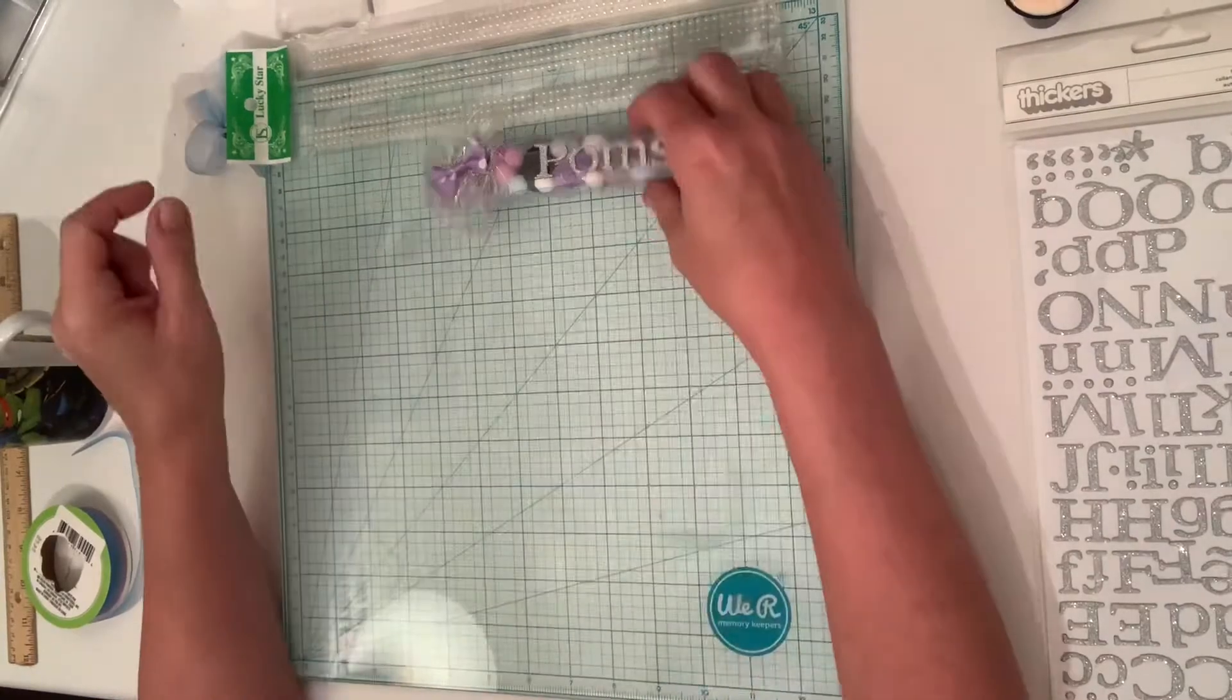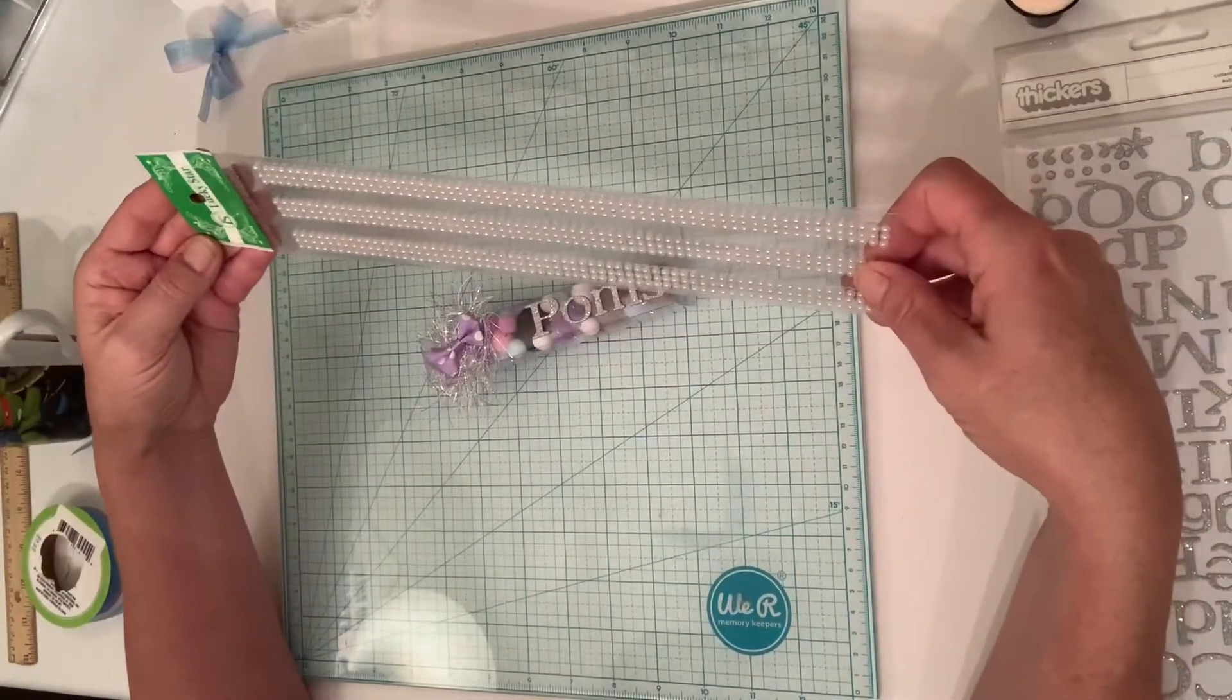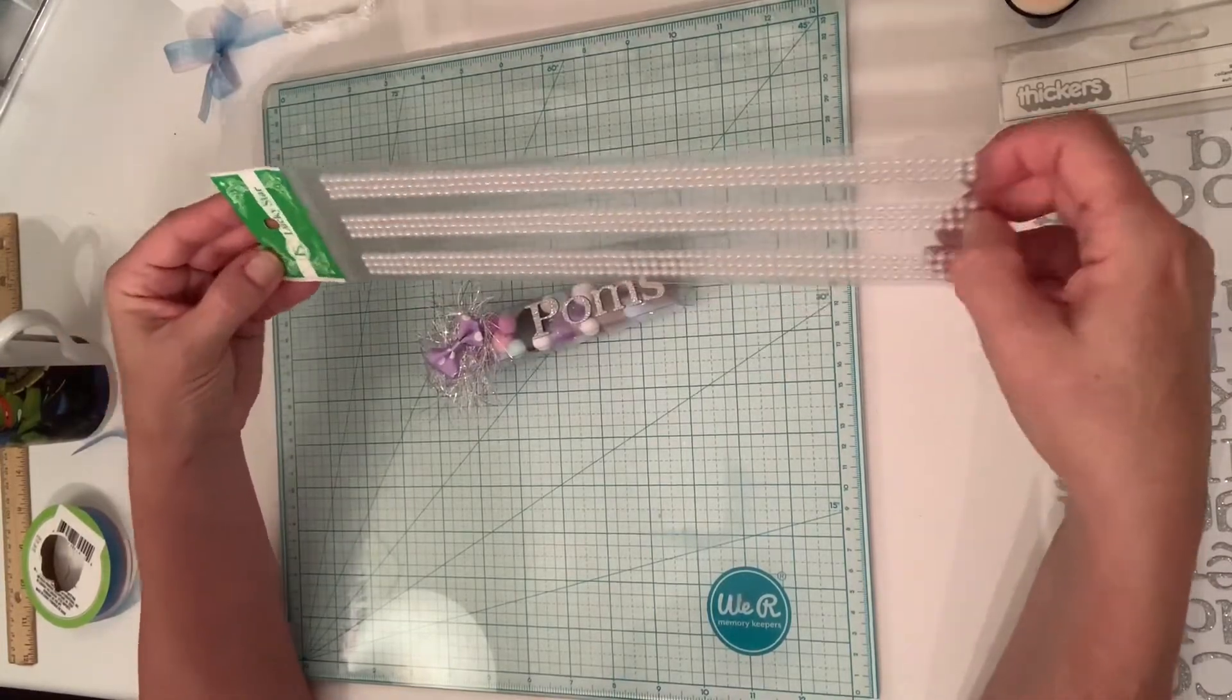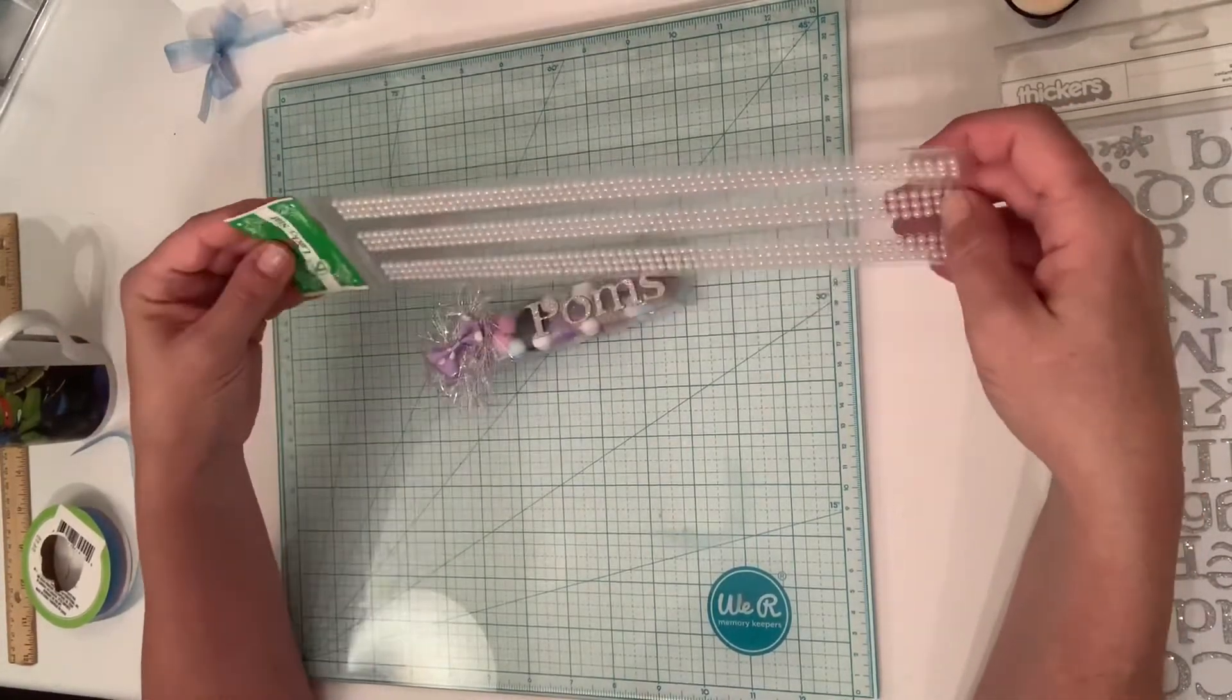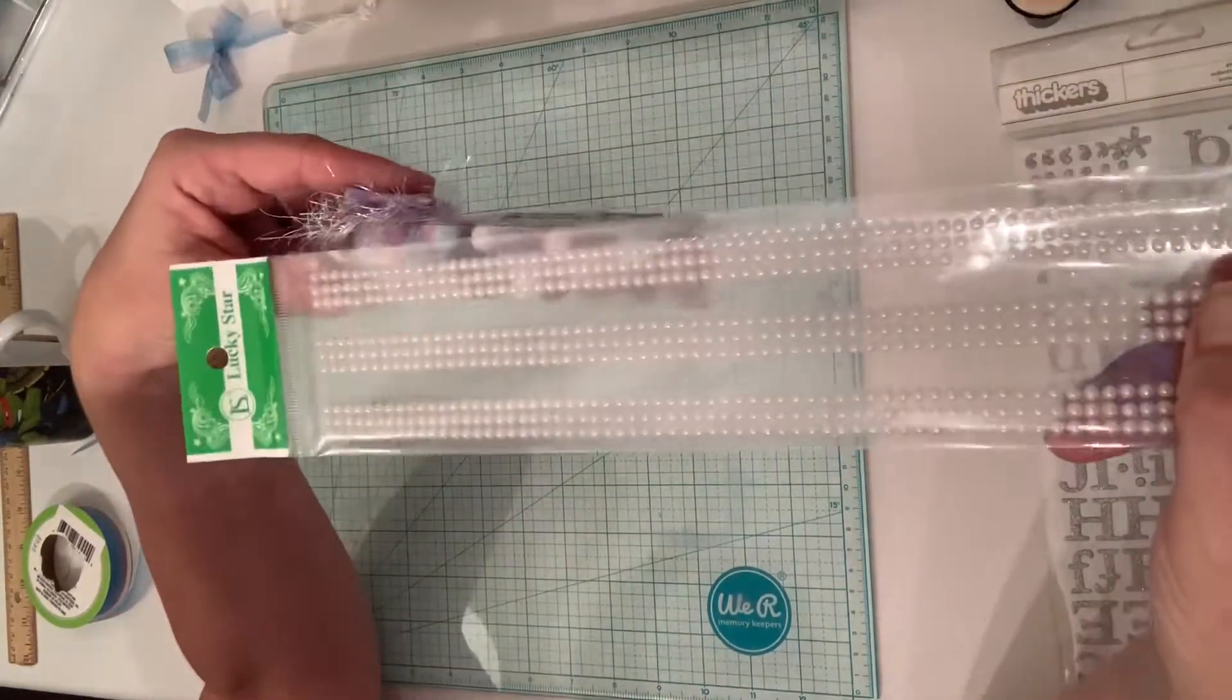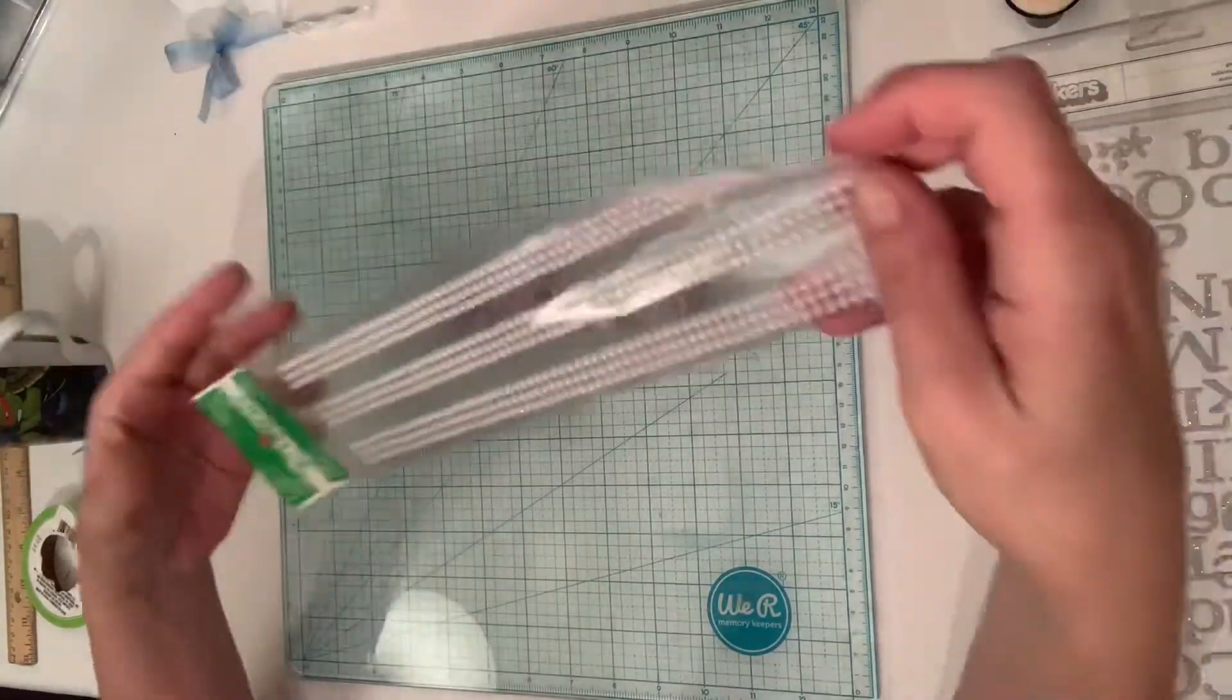But then I also have these strips that I was gifted in a swap. They look like they might be like a dollar store kind of thing, and these actually would have fit perfectly on here as well. So that would have been another great way to decorate it.